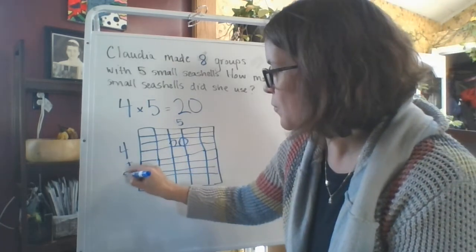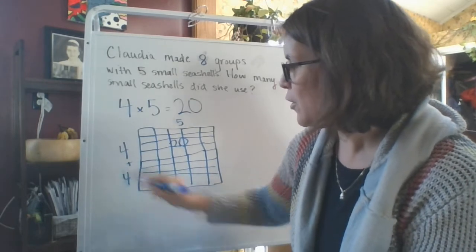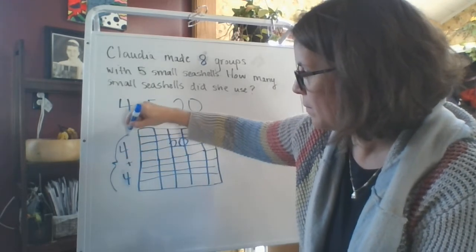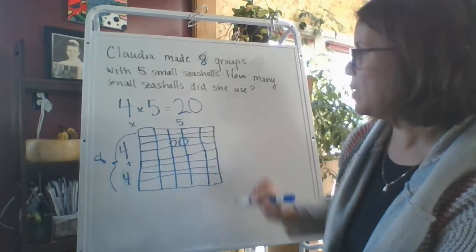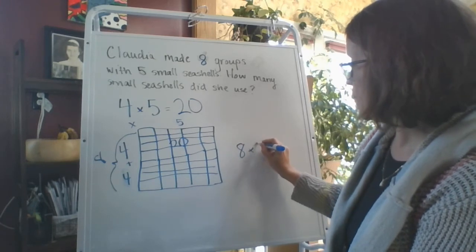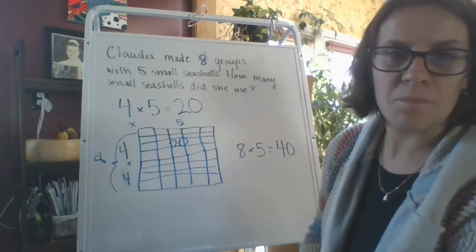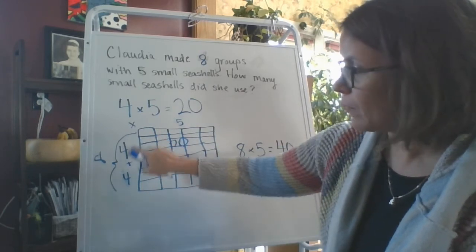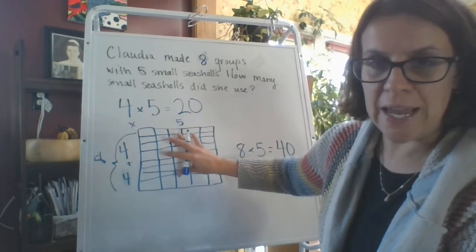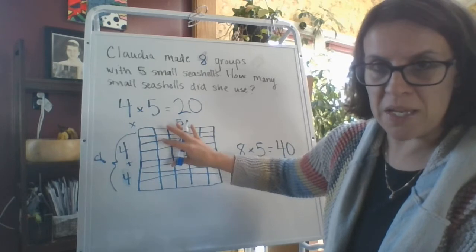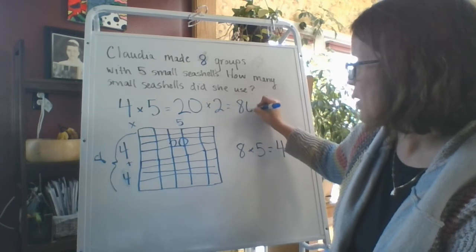And I'm just going to add on another area of 20, right? Because four plus four is, oops, four plus four is eight, right? And this is really eight times five, 40. So what am I reviewing? You can double your four to make your eight. You're doubling the area model that you're making, or you're doubling the amount of seashells.